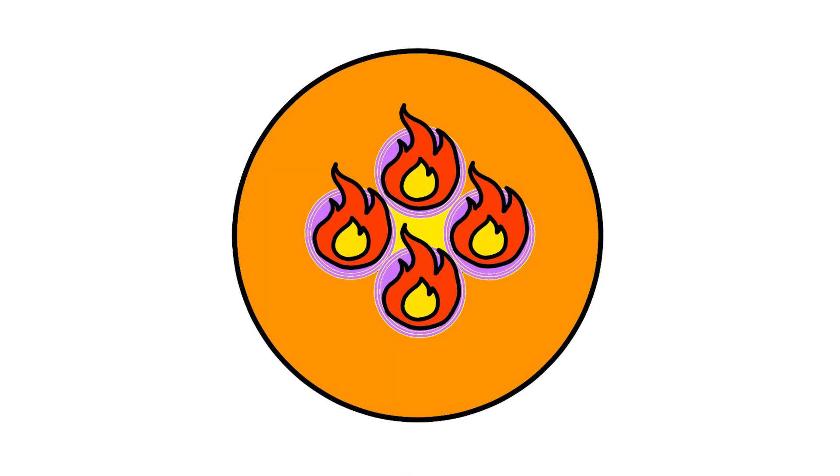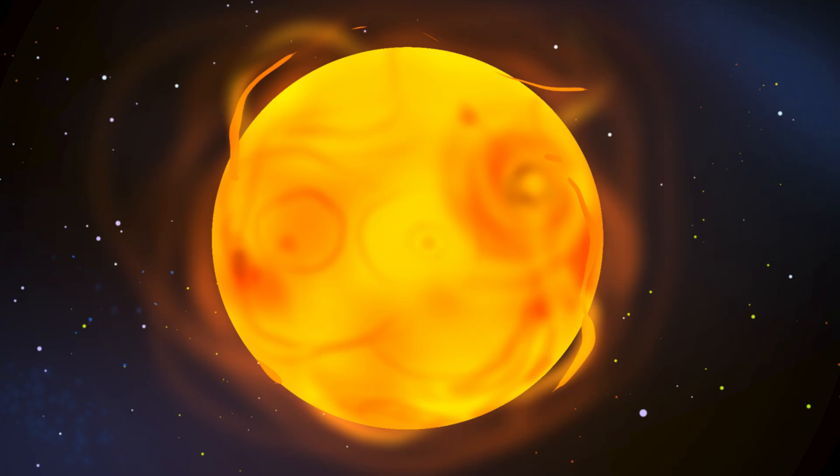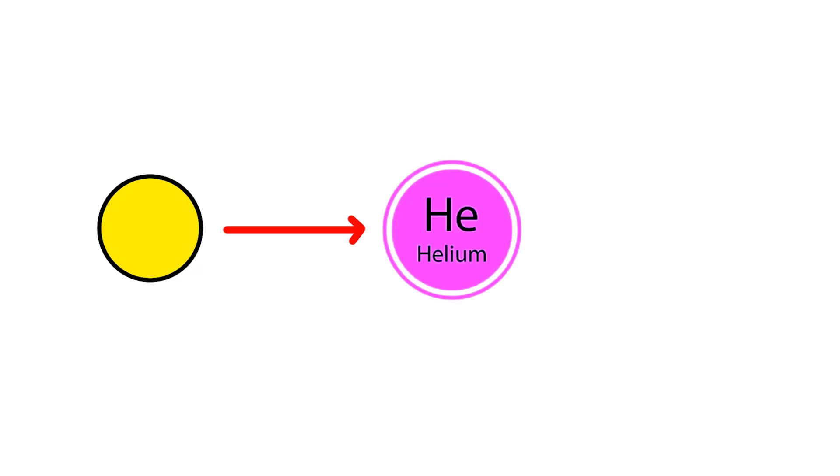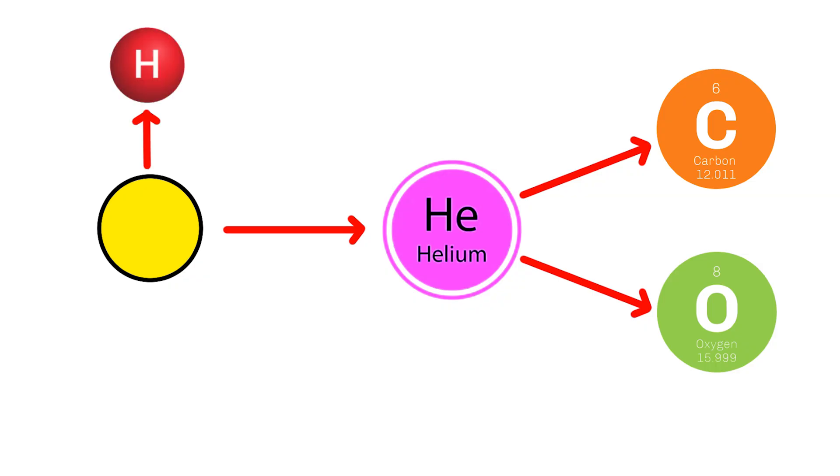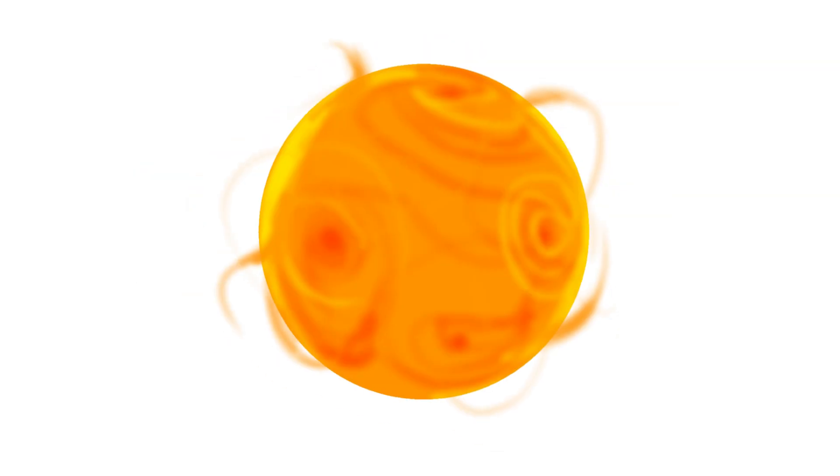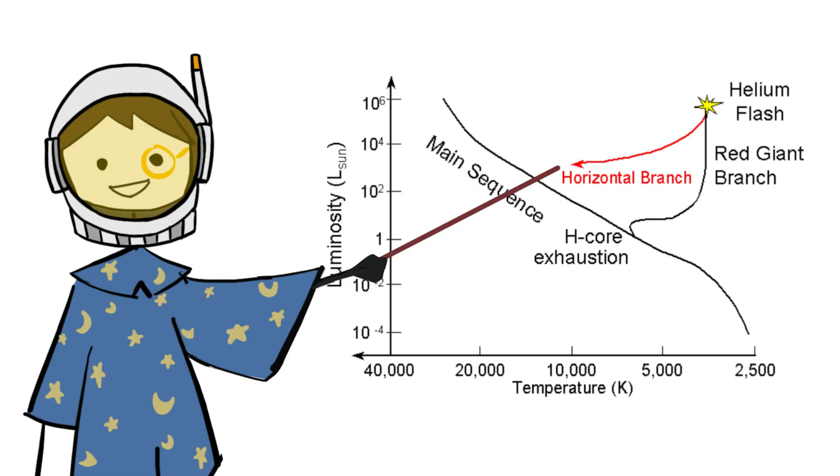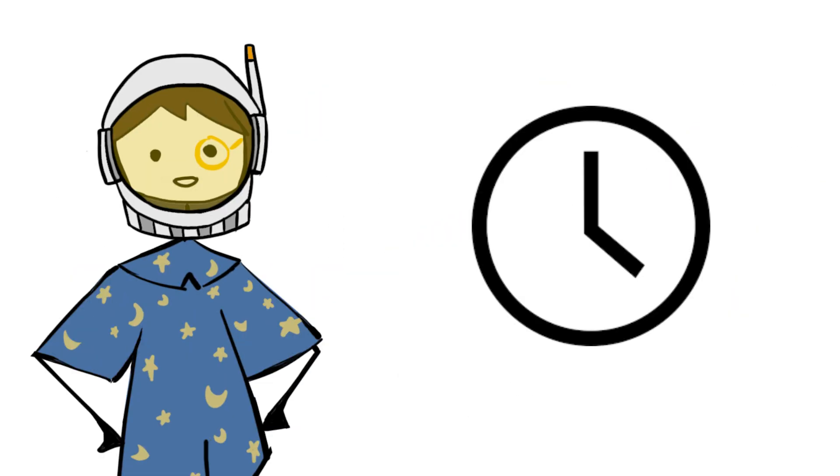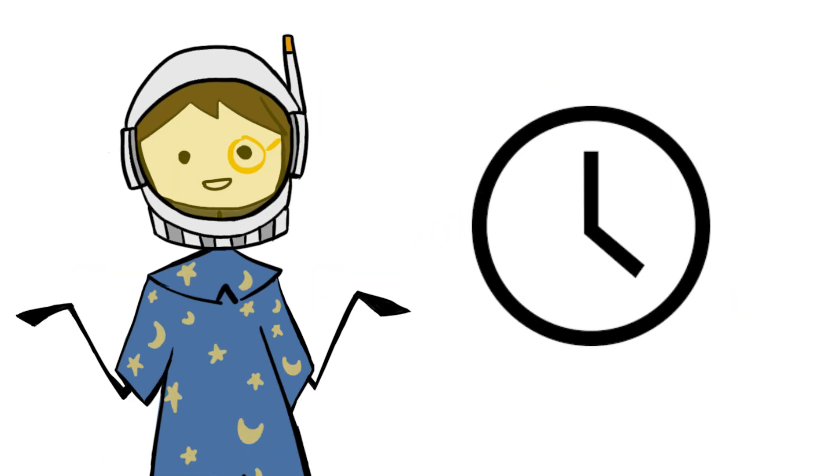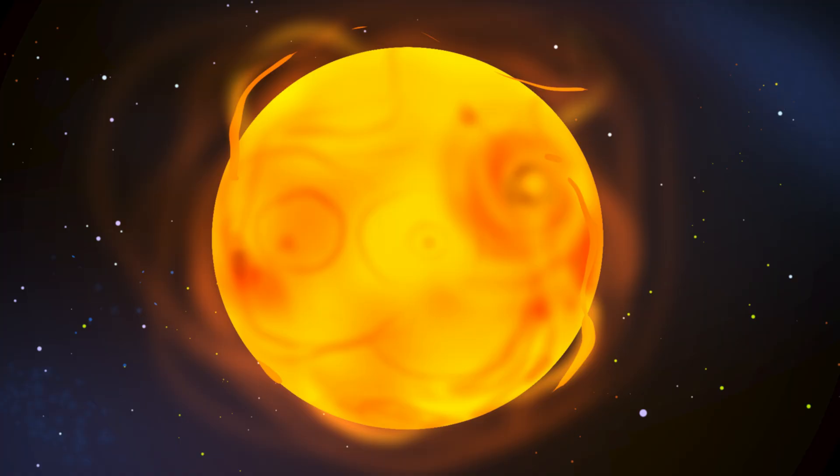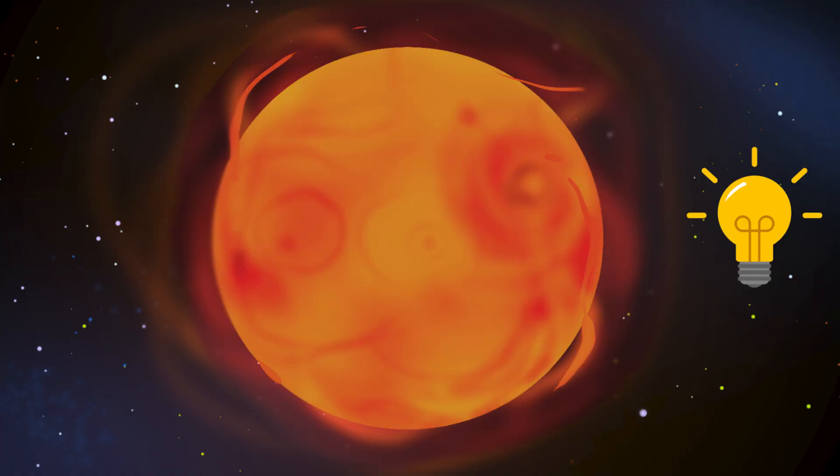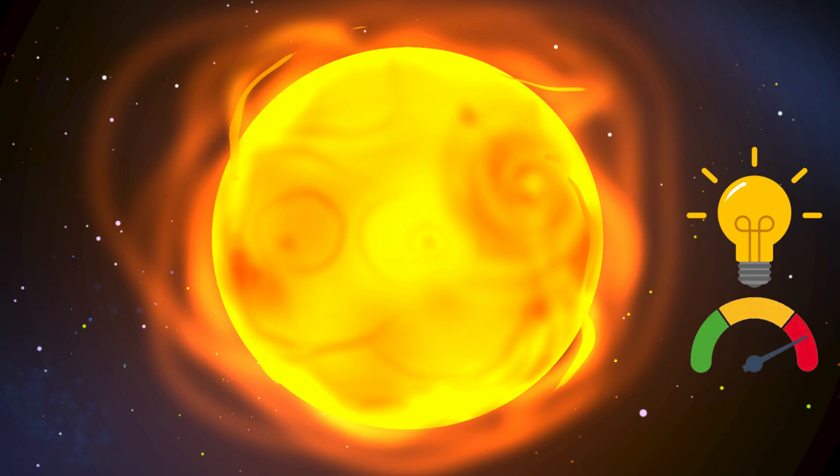The helium flash, though invisible from the outside, represents a fundamental shift in the Sun's structure. The core now fuses helium into carbon and oxygen, while hydrogen continues to burn in a shell above it. The Sun contracts slightly and stabilizes, entering the horizontal branch phase. This period of relative calm lasts for about 100 million years. The Sun is still a red giant, but its luminosity stabilizes at a lower level than during the peak of the red giant expansion.